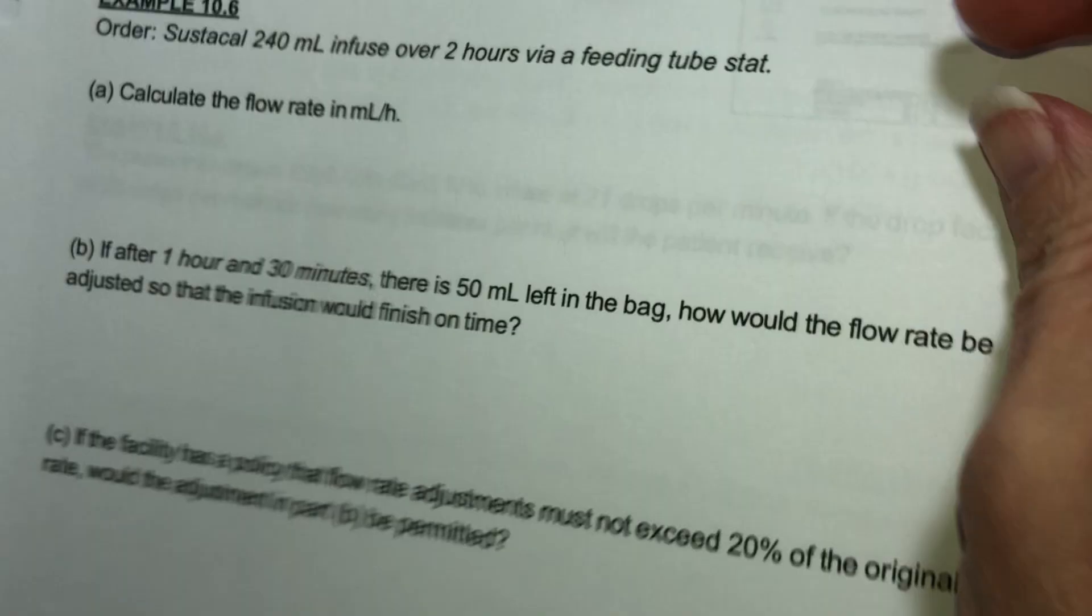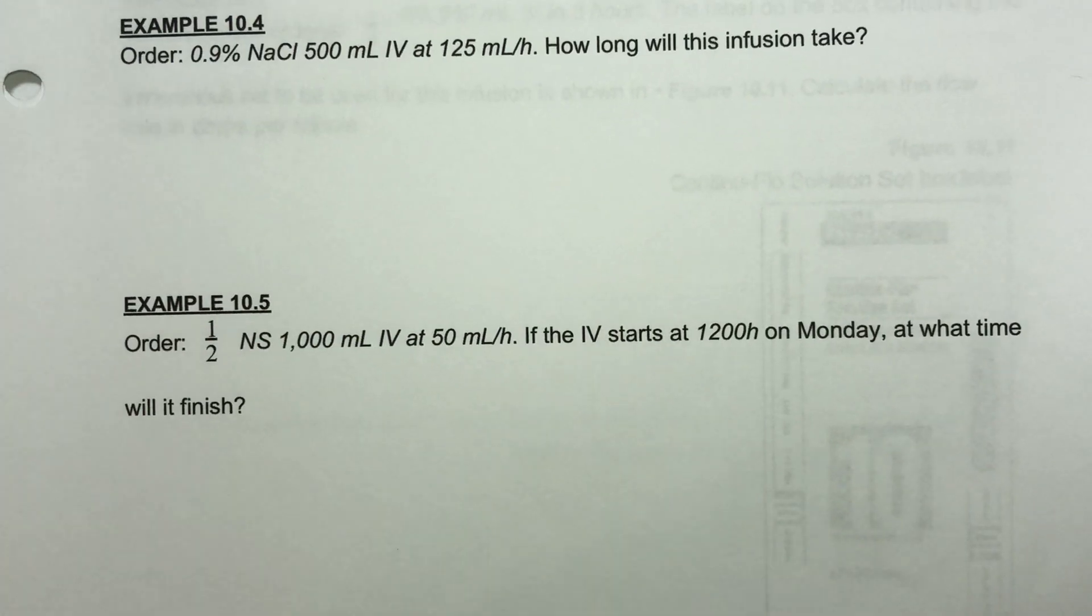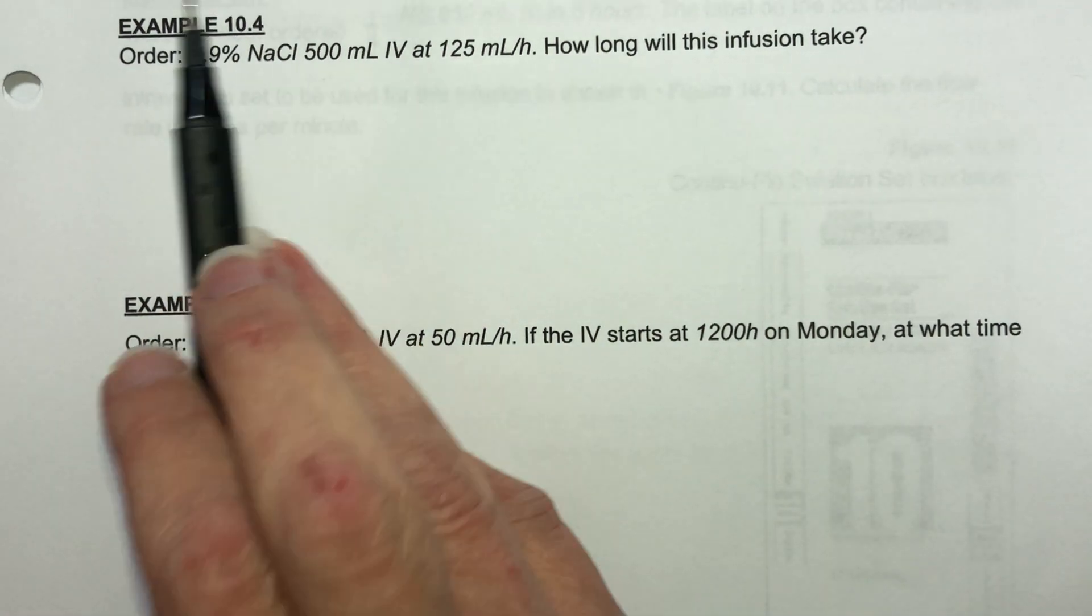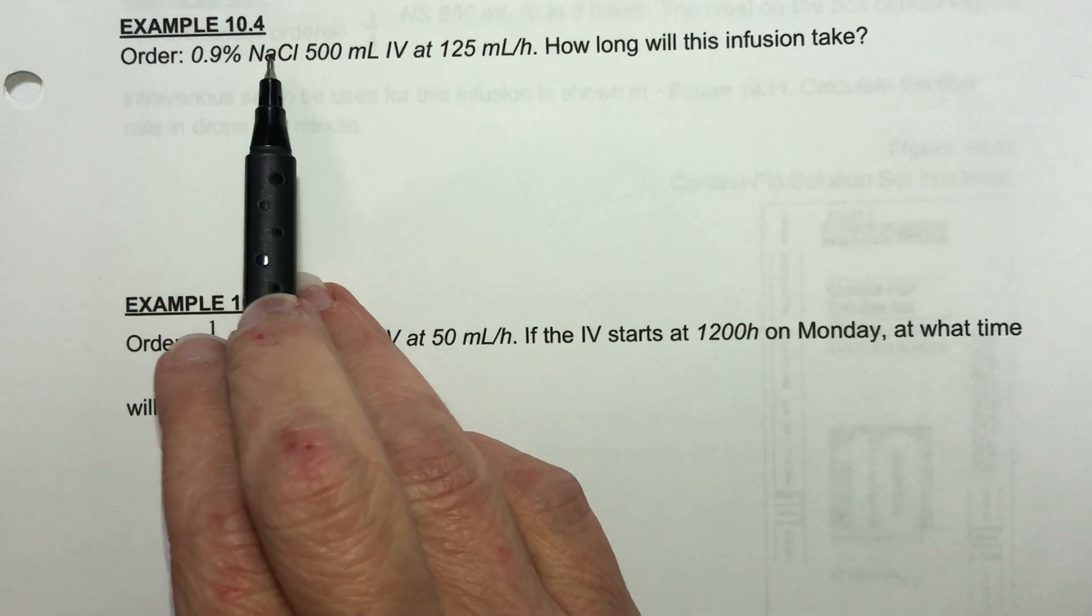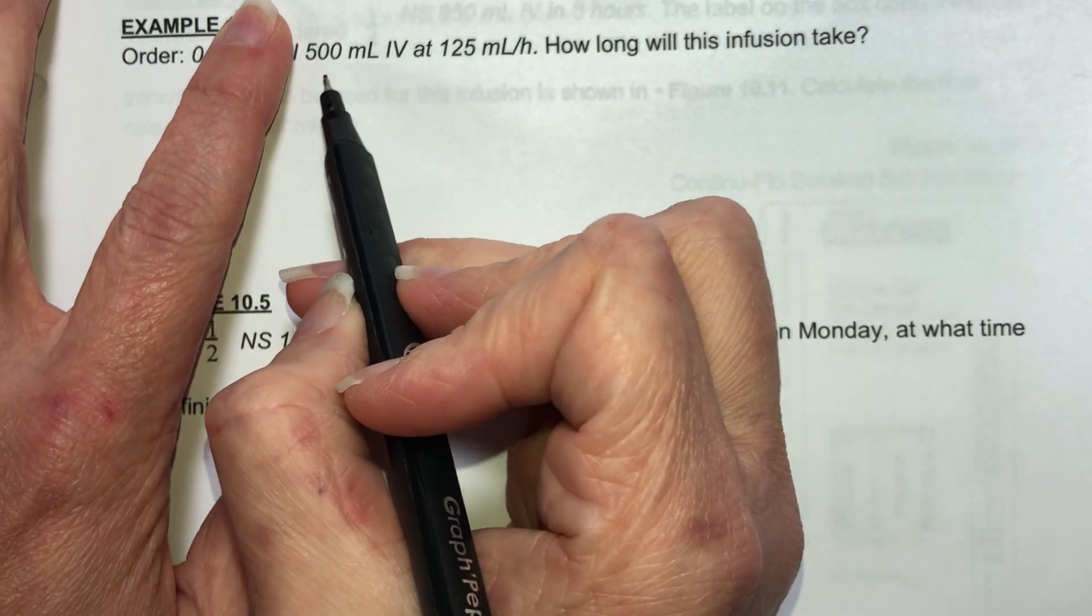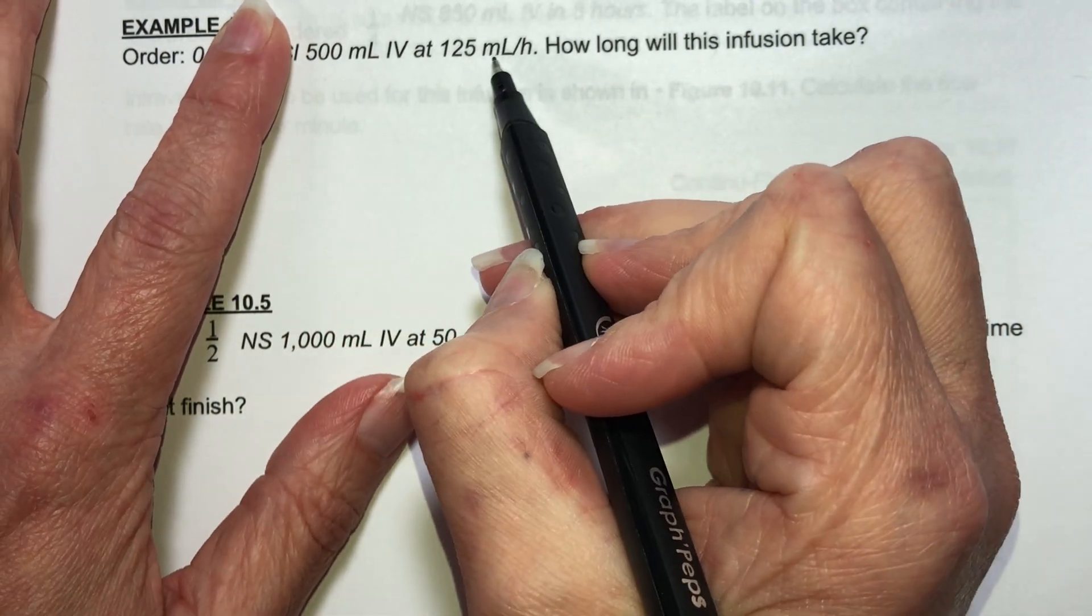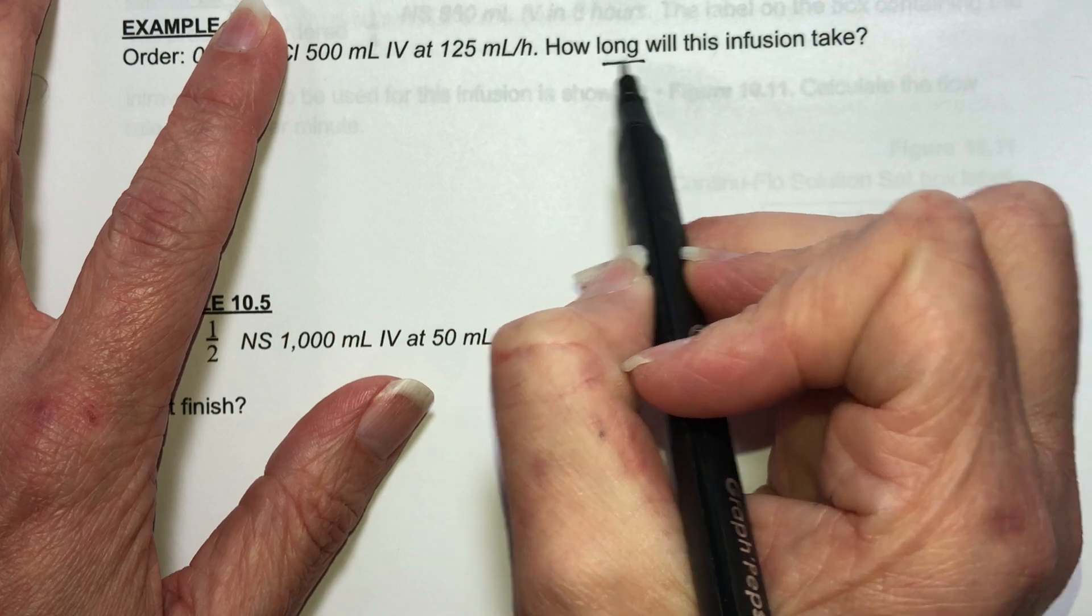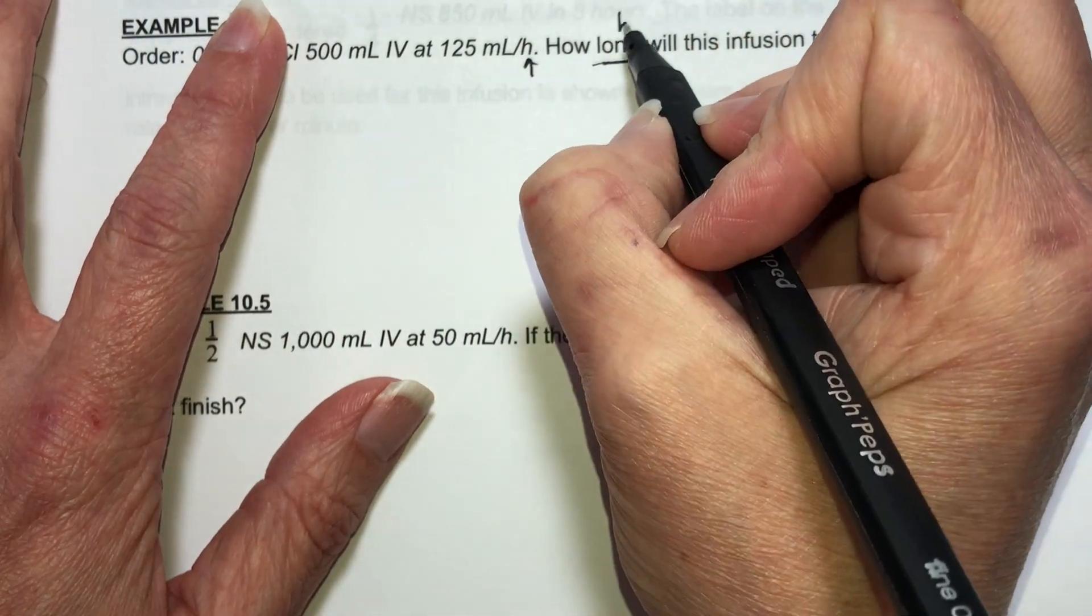Let's look at number 4. The order is for 9% saline solution. We don't have to worry about that. This is a bag you'll go pick up. 500 milliliters at 125 milliliters per hour. How long will this infusion take? So this is in hours. We're actually looking for hours here.